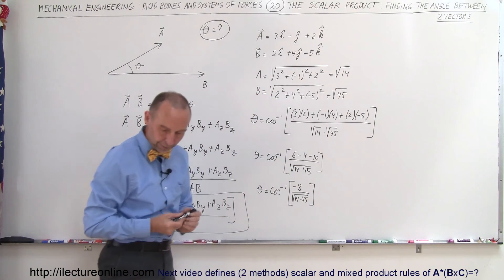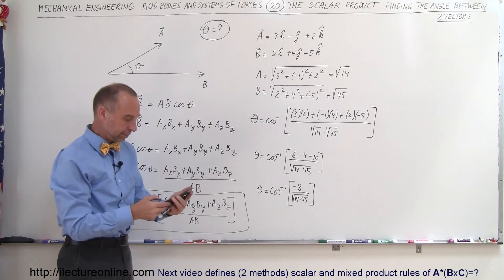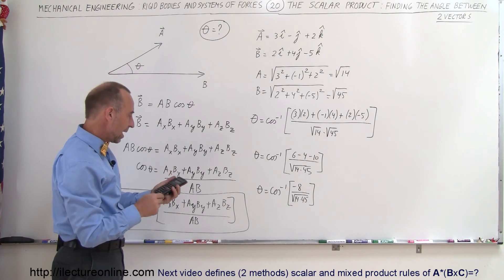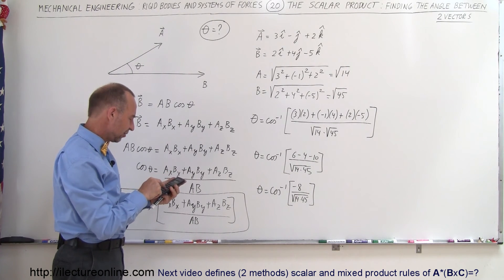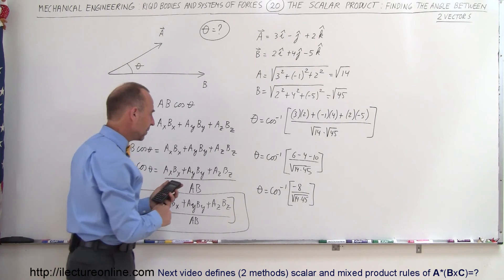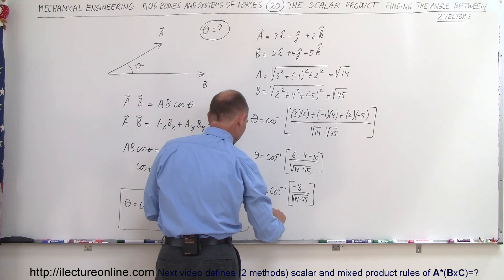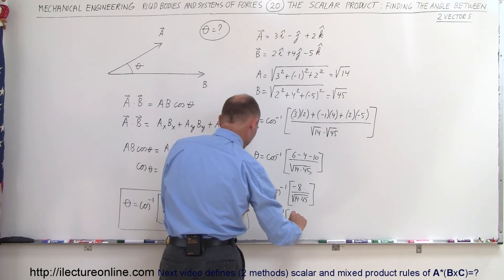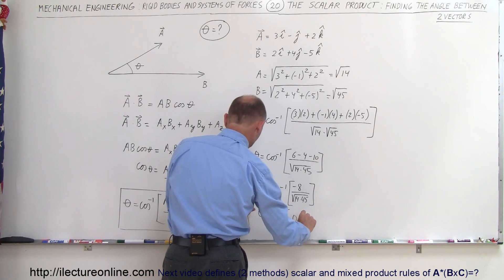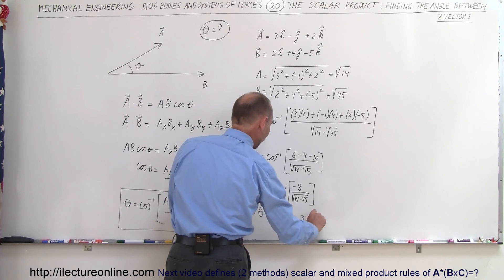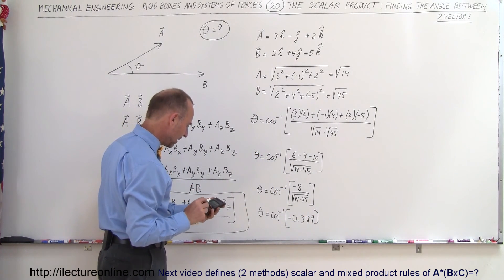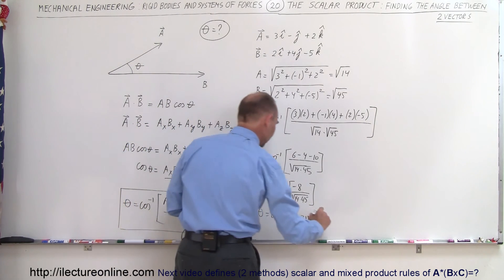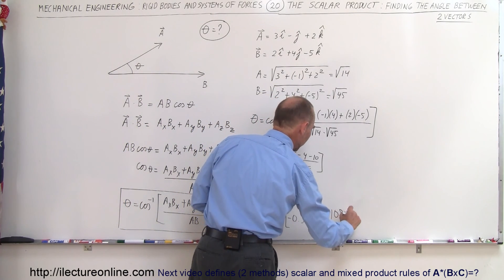At this point we need a calculator. Taking 14 times 45, taking the square root of that, then the inverse, and multiplying by negative 8, we get that theta is equal to the inverse cosine of minus 0.3187. Taking the inverse cosine of that gives us 108.6 degrees. So theta is equal to 108.6 degrees.